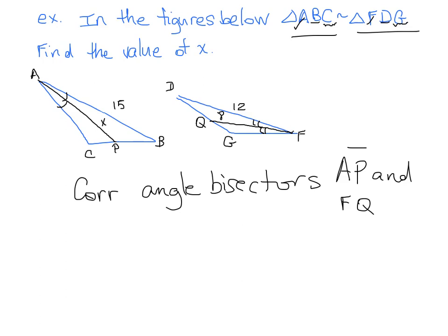We also need at least one pair of corresponding sides in order to set up a proportion. We do have sides going on here. We have this side AB, which is 15, and we have FD, which is 12. Fortunately for us, those are actually corresponding sides. AB and FD are corresponding sides, so that is awesome. Let's set up our proportion.